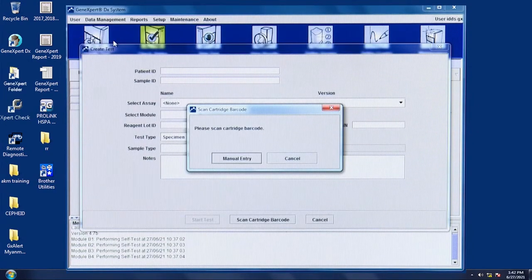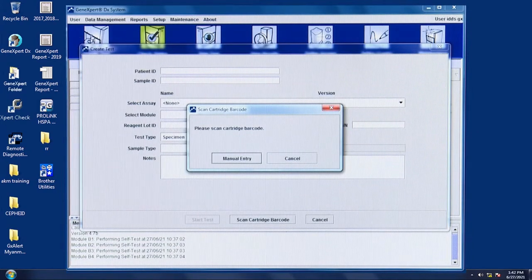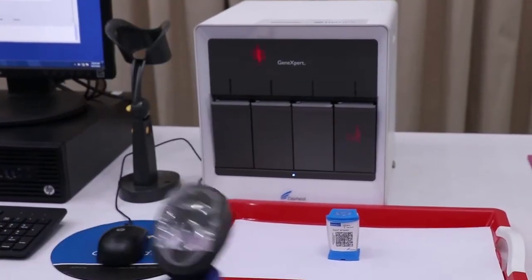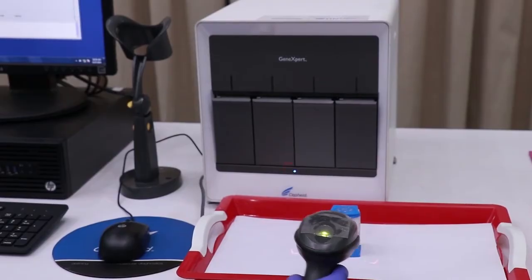When the Scan Cartridge Barcode dialog box appears, scan the barcode on the Xpert MTB-RIF cartridge with the barcode scanner. A beep sound will be heard.